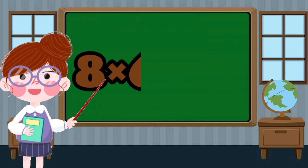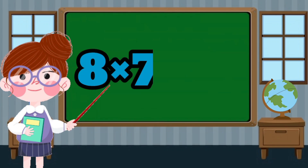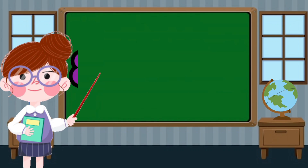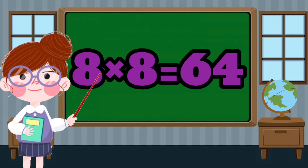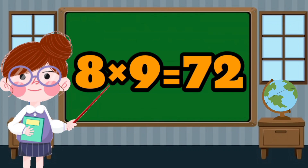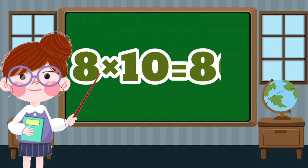8 x 6 equals 48. 8 x 7 equals 56. 8 x 8 equals 64. 8 x 9 equals 72. 8 x 10 equals 80.